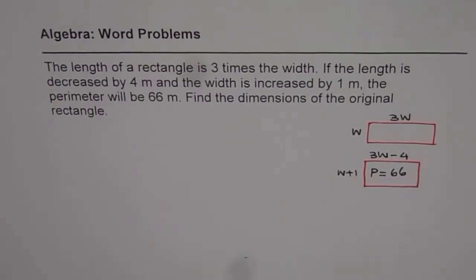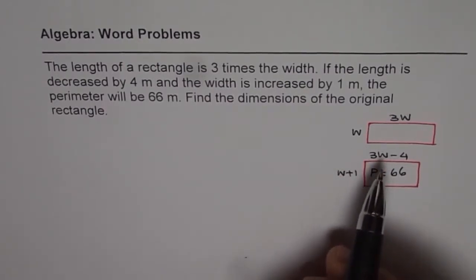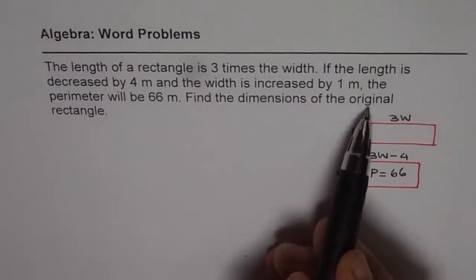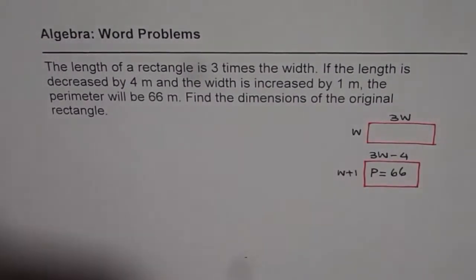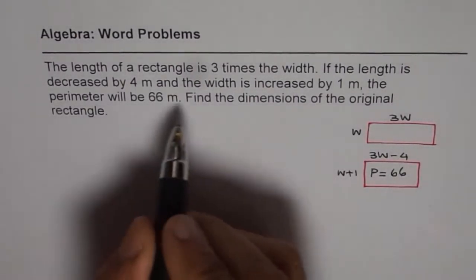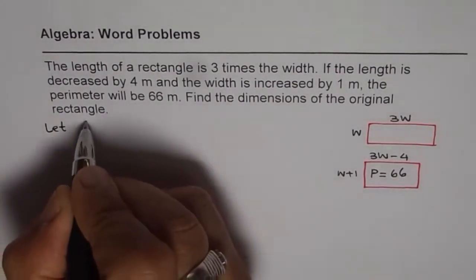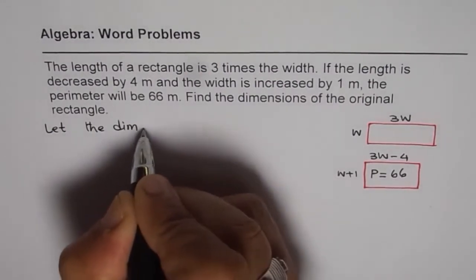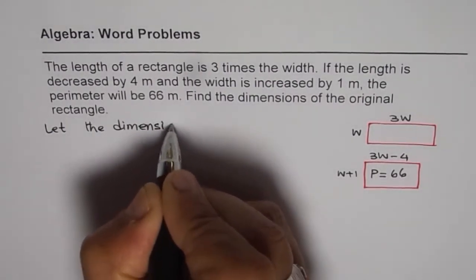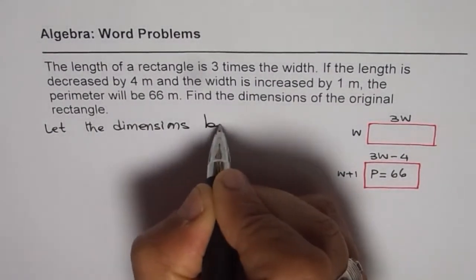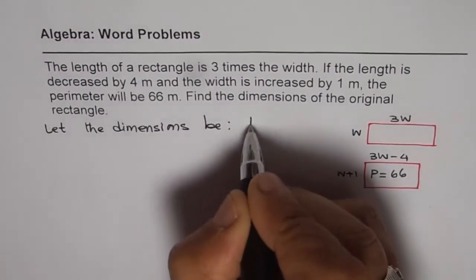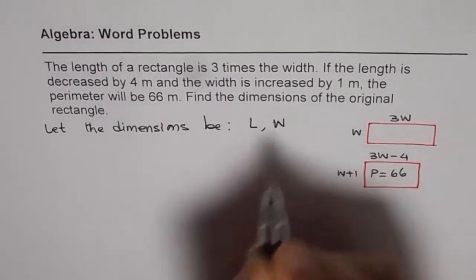So that is how we can sketch and understand a question. Now let's try to figure out how to solve it. The question is find the dimensions of the original rectangle. So let's start with what we need to find. Let the dimensions be: length is L and W is width.